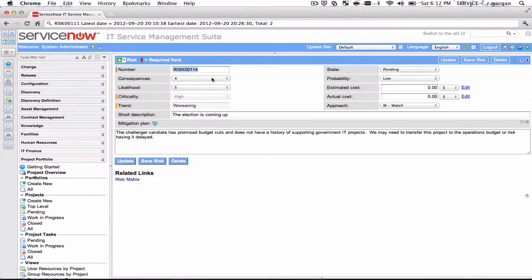Now what we have here is the two choice lists that allow me to select consequences and likelihood, and you'll notice the criticality is currently high. If I were to change this to say one, based on our logic, it's gonna drop the criticality to low. Let me put them both at three and let me go over to this risk matrix.